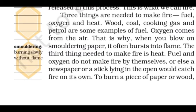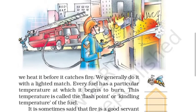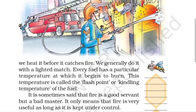To burn a piece of paper or wood, we heat it before it gets to fire. We generally do it with a lighted match. Every fuel has a particular temperature at which it begins to burn. This temperature is called the flash point or kindling temperature of the fuel. This is very important — mark it down.